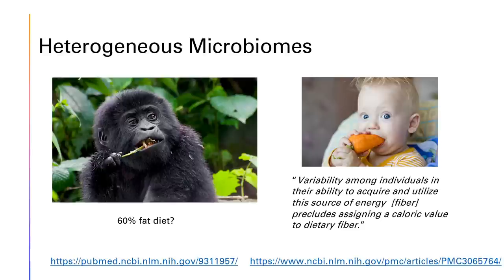How is this possible? Gorillas only consume about 2.5% of their dietary calories as fat, but they have microbiomes in their colon specialized for turning fiber — which people usually assume has no calories — into short-chain fatty acids. Those fatty acids enter the gorilla's bloodstream and account for 57.3% of their caloric needs. So 2.5% dietary fat plus 57.3% from fermented fiber equals about 60% of a gorilla's calories from fat, with the rest from a mix of protein and carbohydrates.